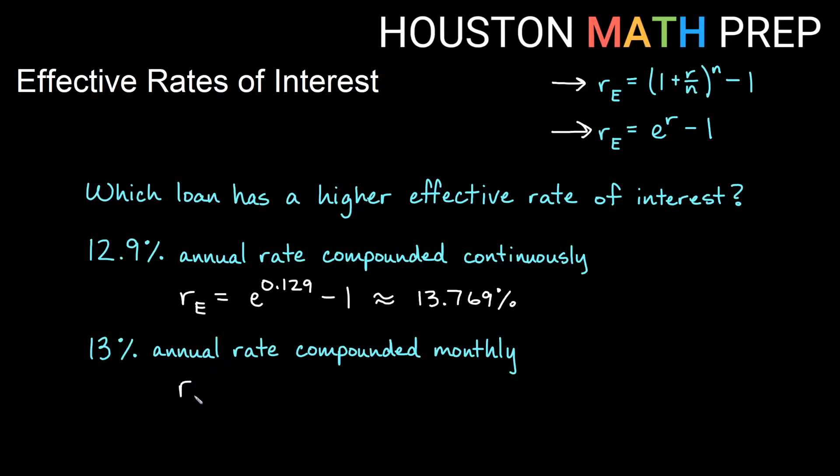So we'll go ahead and plug that in. So our effective rate of interest for this one is going to equal 1 plus my rate over n. We're compounding monthly. So n is 12 to the 12. We also have an n there in the exponent minus 1. And if we plug that into the calculator and round to three places here, we get 13.803% interest. So if we're looking for which loan has a higher effective rate, then the one that compounds monthly at 13% has a higher effective rate than this 12.9 compounded continuously.